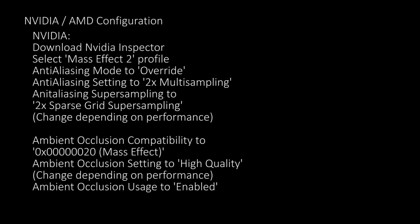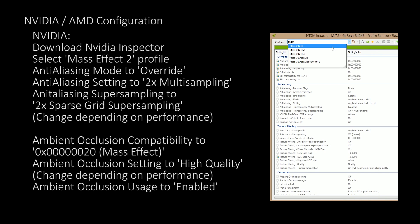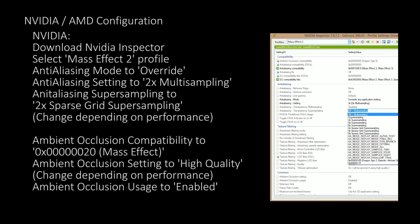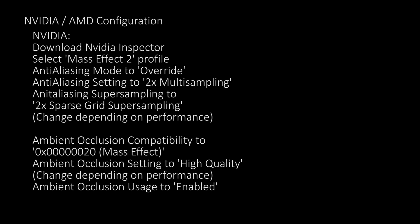This next section will focus on NVIDIA and AMD specific configurations. For NVIDIA users we can use NVIDIA Inspector to enable ambient occlusion and anti-aliasing. To do this, download NVIDIA Inspector from the description. Once opened, push the Profiles button, then find the Mass Effect 2 profile at the top left. Change Anti-Aliasing Mode to Override, Anti-Aliasing Setting to 2x Multi-Sampling, and Anti-Aliasing Super Sampling to 2x Sparse Grid. These can be increased or reduced depending on your computer's performance. Then to enable Ambient Occlusion, change Ambient Occlusion Compatibility to Mass Effect, Ambient Occlusion Setting to High Quality, and Ambient Occlusion Usage to Enabled. You can reduce or disable this depending on performance. Then apply the changes.